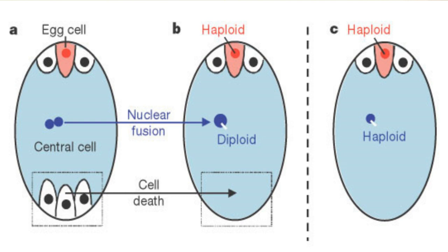The antipodals do not have very important roles and after maturation they get disintegrated. The antipodals are mainly three cells. During development, four cells are towards the micropylar side, that is towards the anterior, and four cells are towards the posterior, that is towards the antipodal side. One cell from that group later disintegrates.